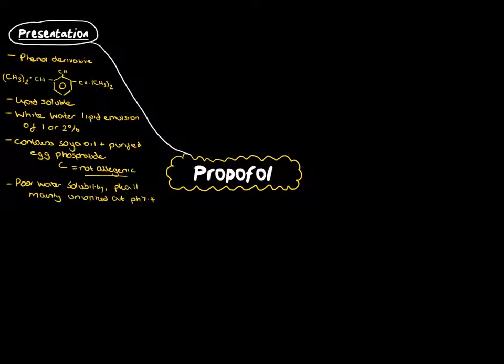The induction dose of propofol is 2-3 mg per kg, and the dose for ongoing ITU sedation or procedural sedation varies depending on the level of RAS you want for the patient or responsiveness in terms of what you're doing.